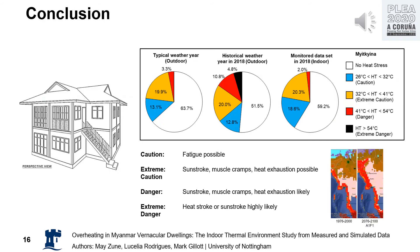Generally, the outdoor dry-bulb temperature rarely exceeds 31 degrees Celsius for prolonged periods. But it can rise above 35 degrees Celsius for dry-bulb temperature in certain cases, causing hyperthermia and other heat-related illnesses.